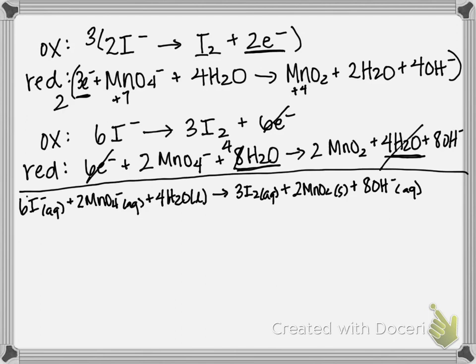But that should be your final answer. Let's go ahead and make sure the charges balance. So I have minus 6 from that iodine, minus 2 from that MnO4, so that gives me a total of minus 8 on this side. And then over here I have minus 8 from my hydroxide and that's it. So minus 8, minus 8, they balance, and all my elements balance. So therefore that is your final balanced equation, and that is how you balance a redox equation in a basic solution.